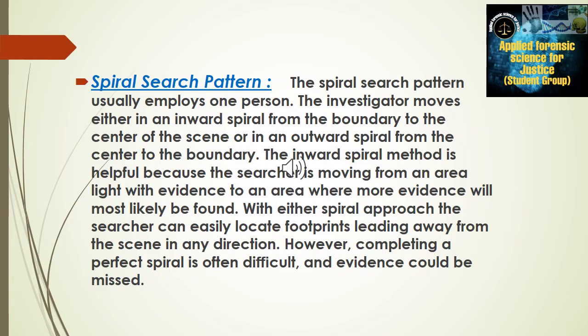The spiral search pattern is usually employed by only one person. The investigator moves either making an inward spiral from the boundary to the center of the crime scene, or an outward spiral from the center to the boundary. The inward spiral is helpful because the searcher moves from an area light in evidence to an area where more evidence can be found. The outward spiral approach allows the searcher to easily locate footprints leading away from the scene. However, completing a perfect spiral is often difficult and evidence could be missed.